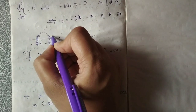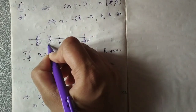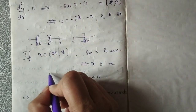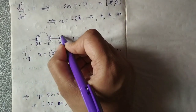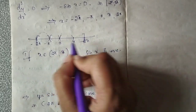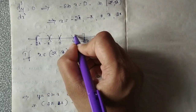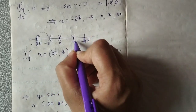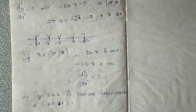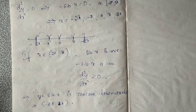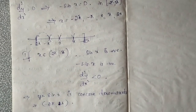Next, we need to check the interval minus pi to 0, then 0 to pi, and then pi to plus 2 pi. You need to check the nature of the given curve in each interval. Please try it yourself and we will continue in the next class.